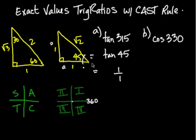So that means to make this look like it's positive, it would have had to have been negative. So the answer for tan 315 is negative 1.